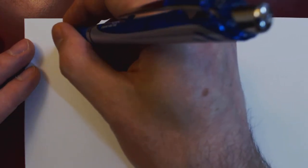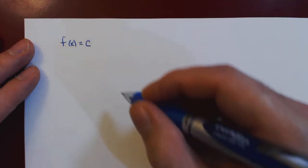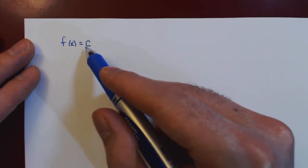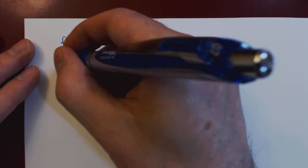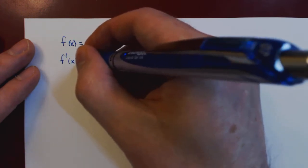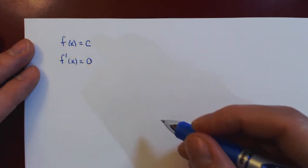Okay, so in this video, we will present the constant rule of differentiation. Assuming we have a function f of x that is constant, so f of x is equal to the constant c for all values of x, then the derivative of f is remarkably simple. It is equal to zero.